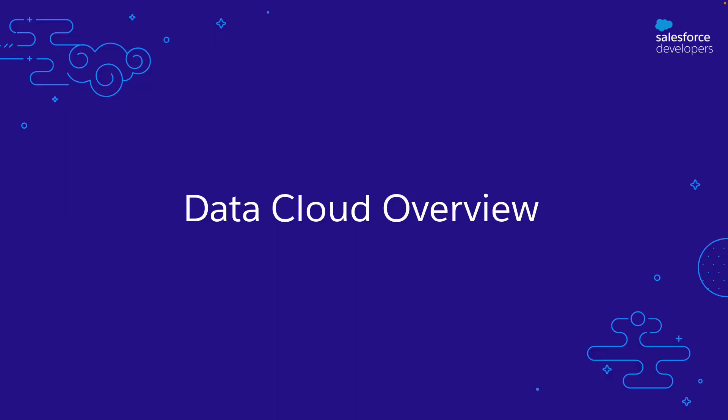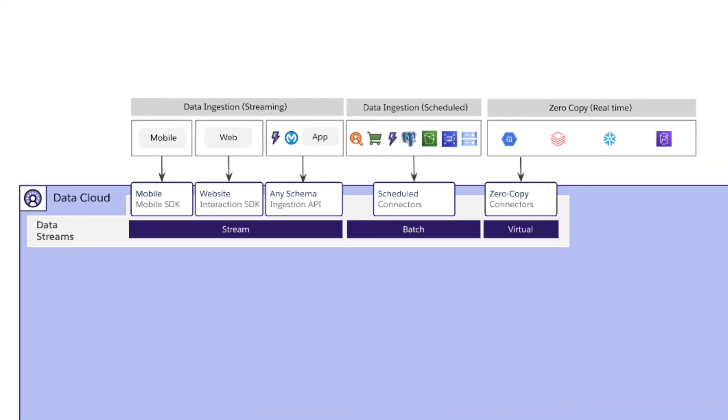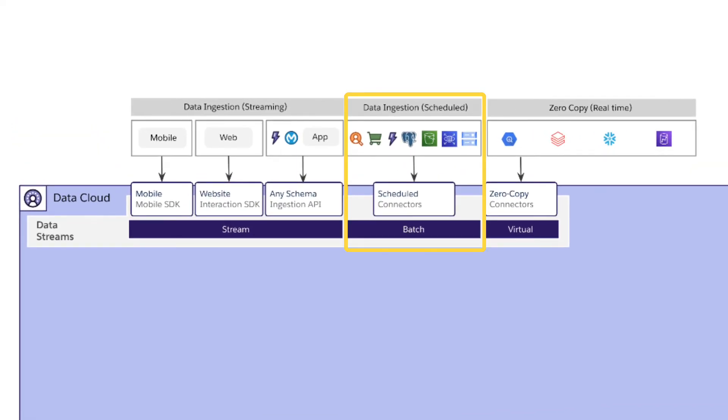By focusing on a specific use case, Coral Cloud Resorts can get value quickly — but know that the capabilities of Data Cloud are broad and deep. In the next few videos, we're going to ingest data from Salesforce and Amazon S3 using prebuilt connectors, using a capability called data streams. Note that there are multiple ways to ingest data, giving Coral Cloud flexibility for future use cases.